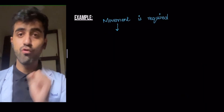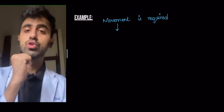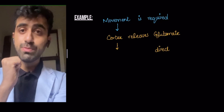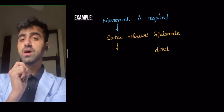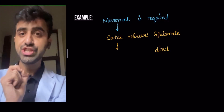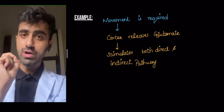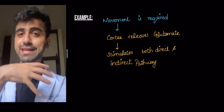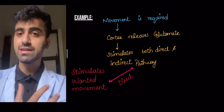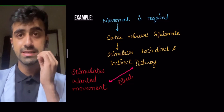For example, whenever a movement is required — such as wanting to move your right hand — the cortex releases glutamate, which stimulates both the indirect and the direct pathway in your basal ganglia. The basal ganglia serves to initiate motor movement. The direct pathway moves your right hand, and the indirect pathway keeps everything else still.